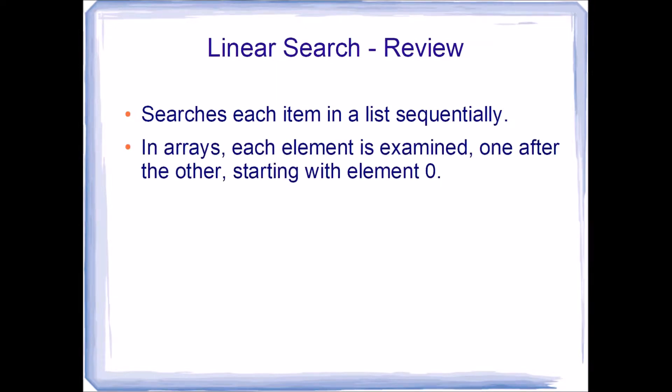Let's begin with a brief review of the linear search and what it does. A linear search searches each item in some list sequentially. In arrays, this means that each element is examined one after the other, starting with the first element of the array.